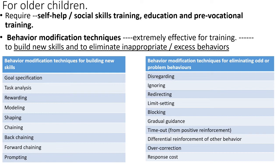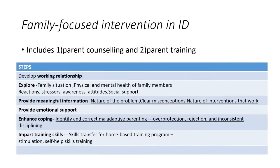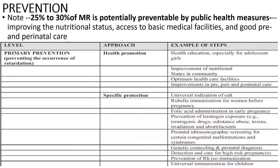Techniques for eliminating problem behavior include: disregarding (ignoring the behavior but continuing attention to the child); ignoring (ignoring both child and behavior); redirecting (catching the child as odd behavior begins and guiding toward appropriate behavior); limit setting (clearly communicating acceptable and unacceptable behavior and enforcing these); blocking (preventing behavior from being completed, e.g., in aggression); gradual guidance (waiting for the child to stop resisting physically, then guiding toward completion); time out (removal of attention and reinforcement contingent on specified maladaptive behavior); differential reinforcement of other behavior (noticing and rewarding the child when showing desirable behavior or when undesired behavior is absent); overcorrection (child must not only restore but do more to set right the damage); and response cost (withholding a privilege the child enjoys contingent on undesirable behavior).